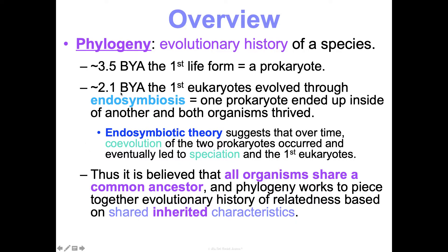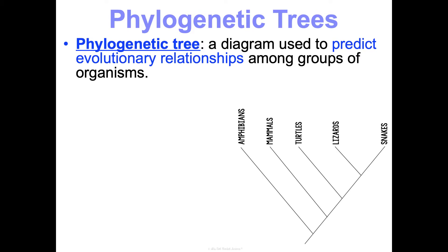Because of that background, scientists believe that all organisms share common ancestry to this original prokaryote. Phylogeny is looking at the evolutionary history and trying to piece it together based on relatedness seen through shared inherited characteristics among organisms. A phylogenetic tree is a diagram that predicts these evolutionary relationships and the relatedness between groups of organisms. Both taxonomy and phylogeny deal with classifying, categorizing, and grouping, and they use a lot of the same evidence to do that.